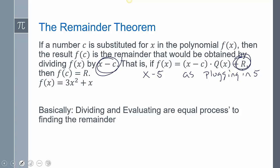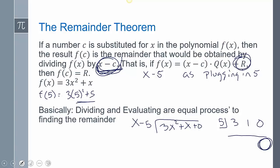I would try it out. I would do f of 5. Pause right now and do f of 5, which is going to be 3 times 5 squared plus 5, and then divide that by x minus 5. Or you can do synthetic division: put the 5 in the box, write out the coefficients 3, 1, and 0, and go through and divide it. I guarantee you what you're going to get here is the same as what you're going to get there with the remainder. Basically dividing and evaluating are equal processes when we're using it in terms of a linear factor to find the remainder.